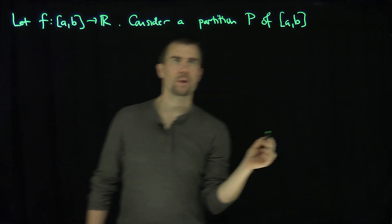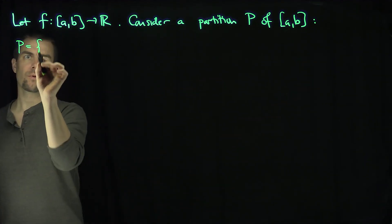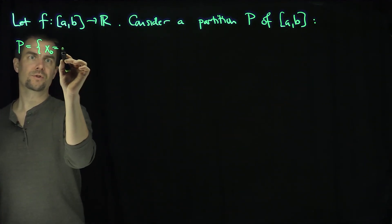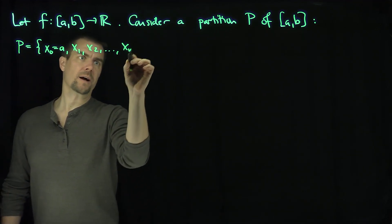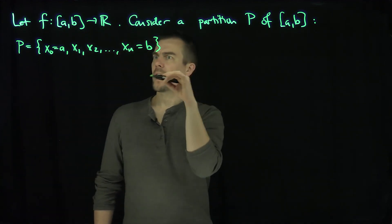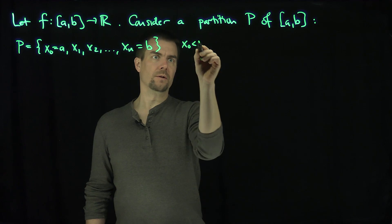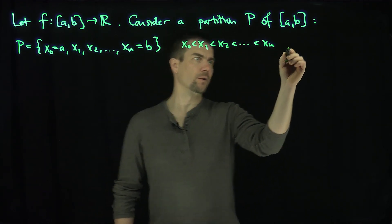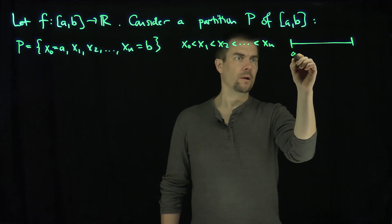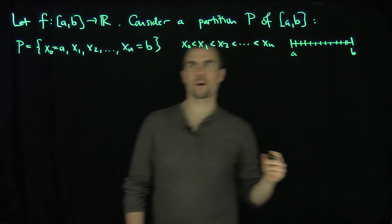Recall what a partition P is. P is just a collection of points: x0 (which is a), x1, x2, all the way up to xn (which is b), and they're lined up like so: x0 < x1 < x2 < ... < xn. In other words, we just chop up the interval [a,b] into a bunch of little pieces. We can always throw a and b in there.